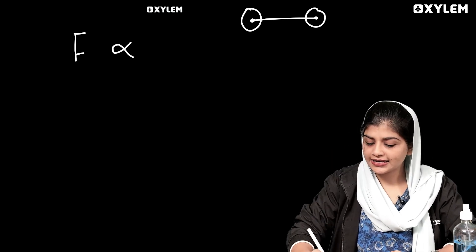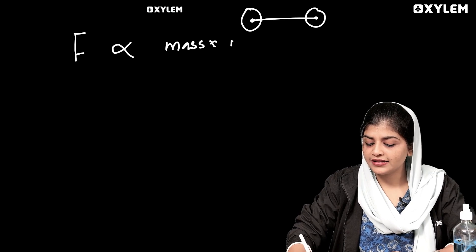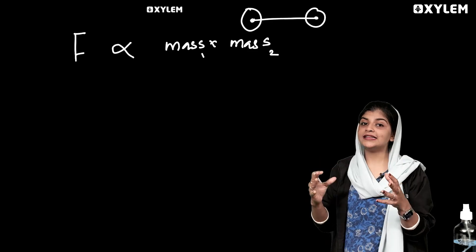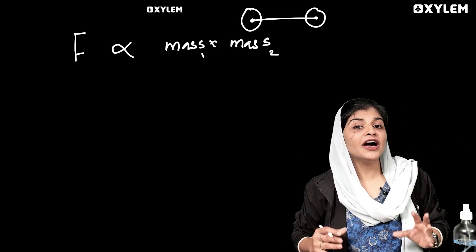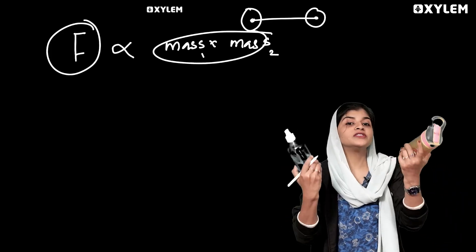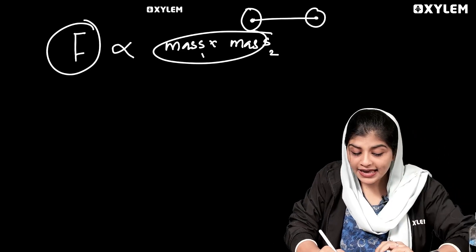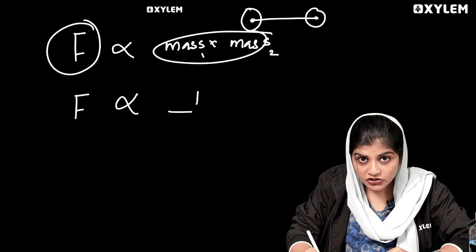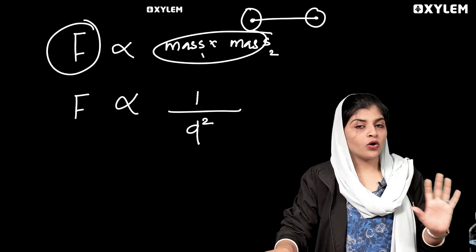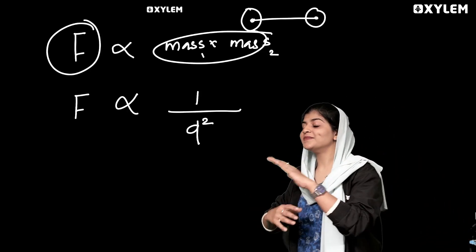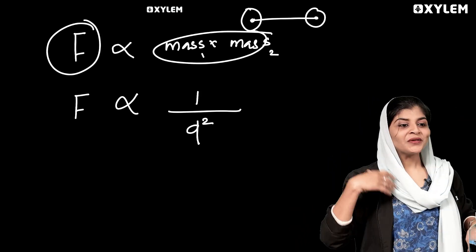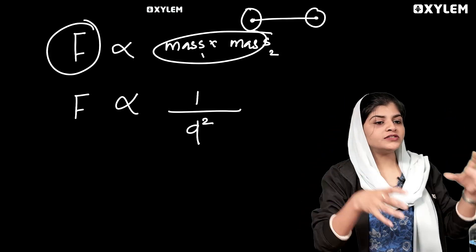The distance is 1.5 m and 2.5 m, directly proportional. That means the mass is directly proportional. Inversely proportional means as the distance increases, the force decreases. Opposite relationship: distance increases, force decreases.